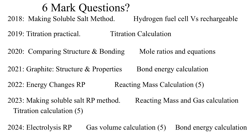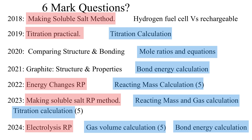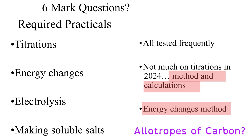If we take a look at the content assessed for the six-mark questions, this broadly falls into two categories: required practical associated questions, or calculations — whether those are to do with bond energies, mole ratios, or gas volumes. The few exceptions include a hydrogen fuel cell versus rechargeable fuel cell comparison in 2018, structure and bonding comparisons, and graphite structure and properties. For 2025, the required practicals have a high likelihood as they are all tested frequently. In 2024 there was not very much on titrations, so a six-mark question about method or calculation seems highly likely. Additionally, the energy changes method has not been tested very much since 2022, making that a good candidate for a six-mark question.